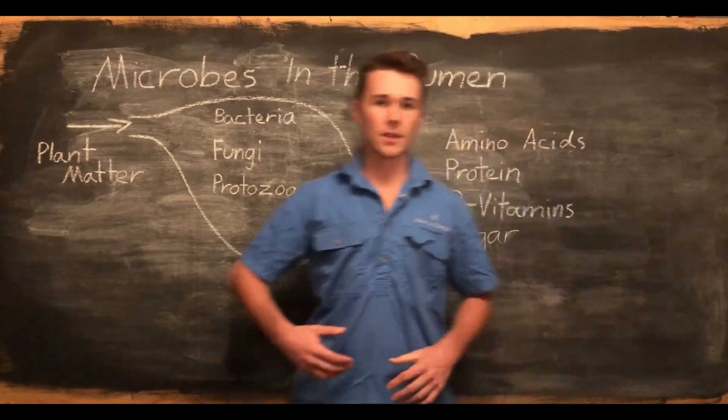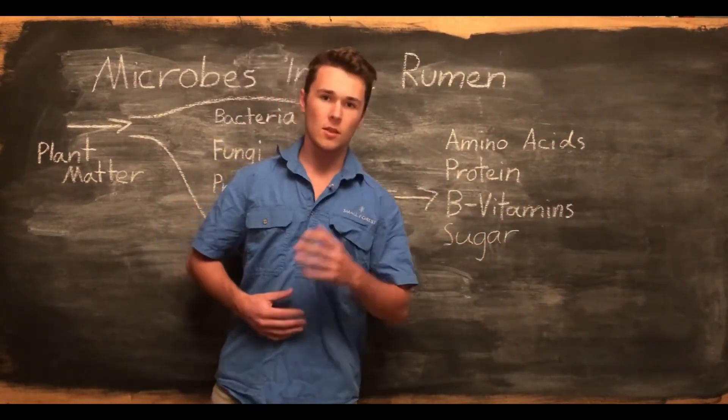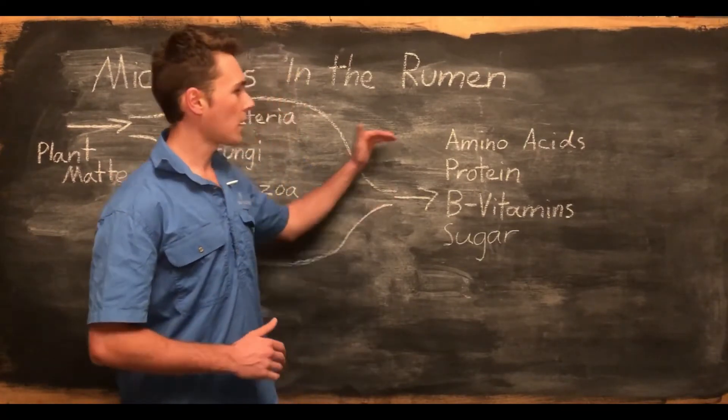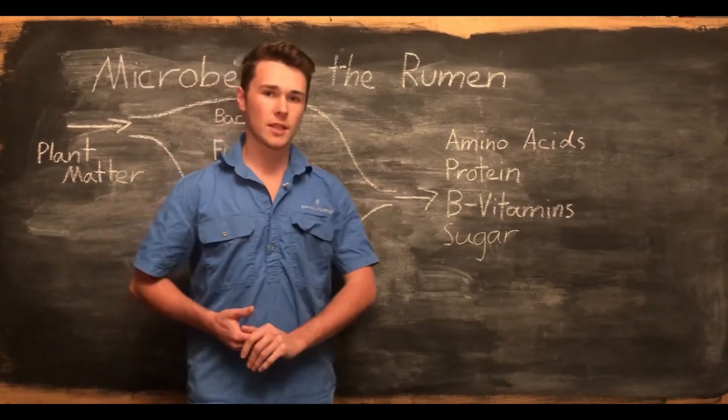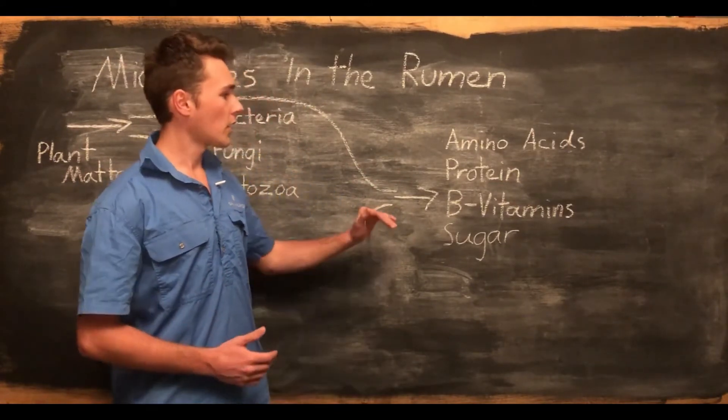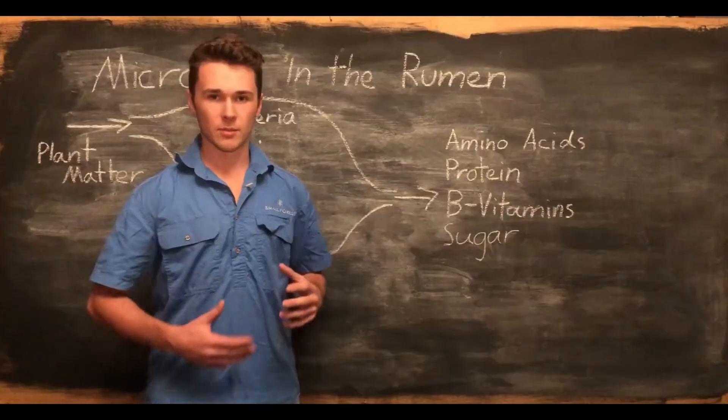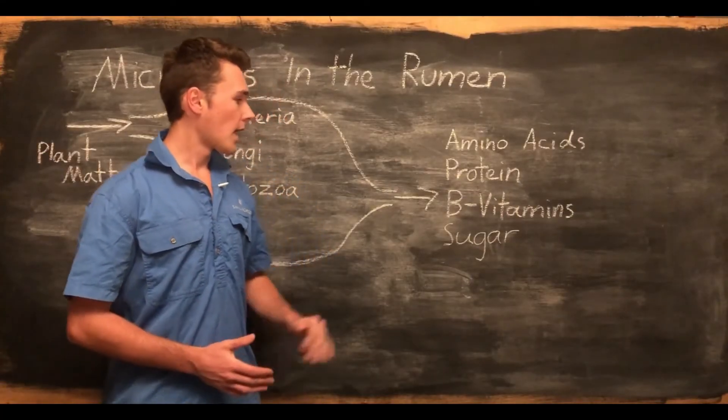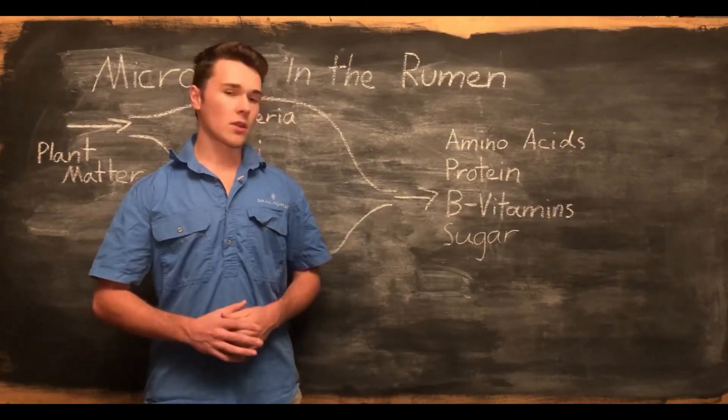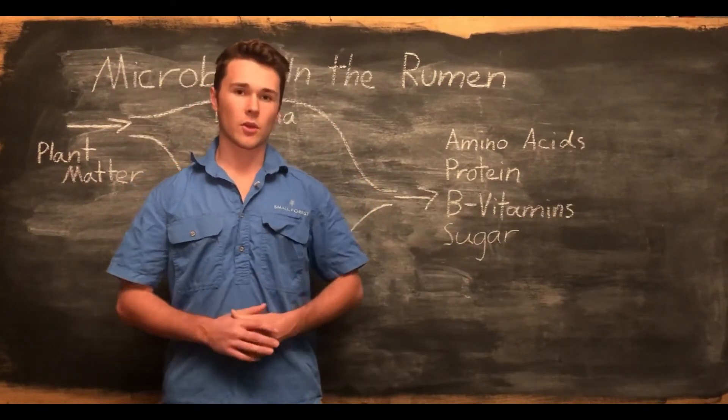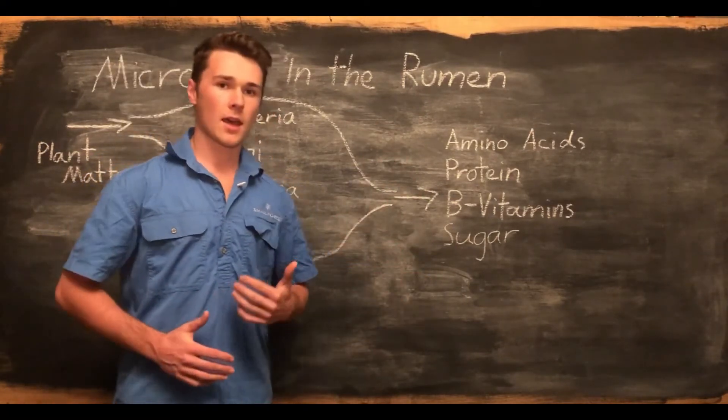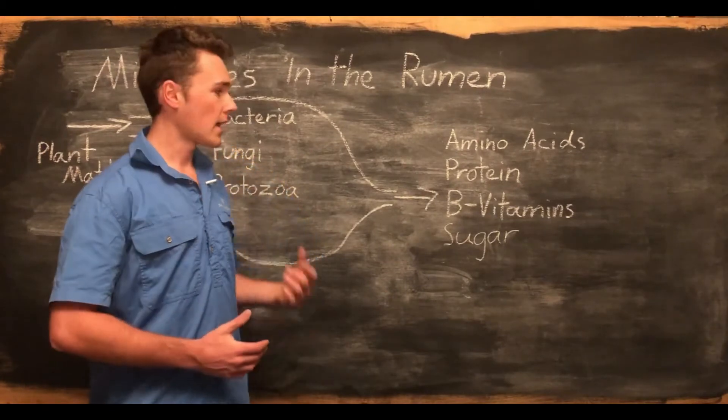As microbes decompose plant matter, we get amino acids as they break down proteins and form their own proteins. We also get microbial protein as the microbes eat and grow. We get B vitamins that these microbes produce, and sugars. Cellulose is made up of a long chain of glucose, and they break down this long chain into more simple sugars. This is the benefit that ruminating animals get from their relationship with microbes.